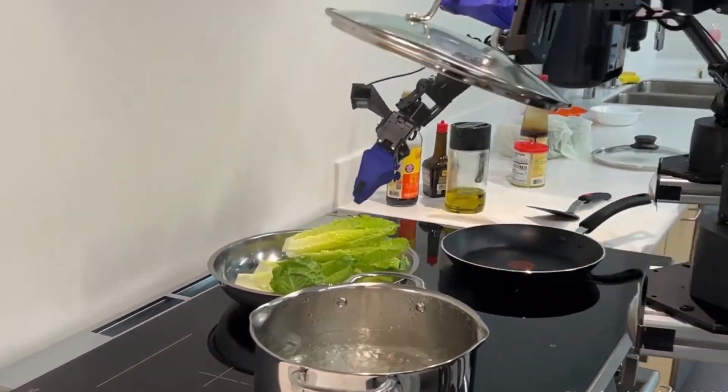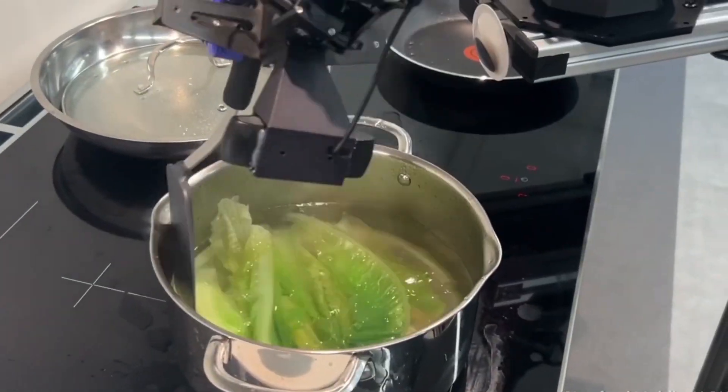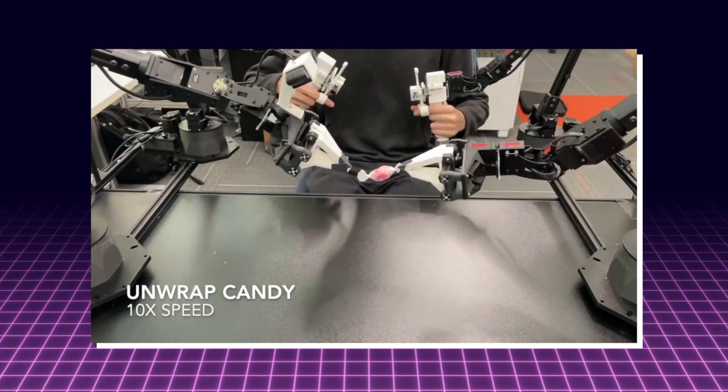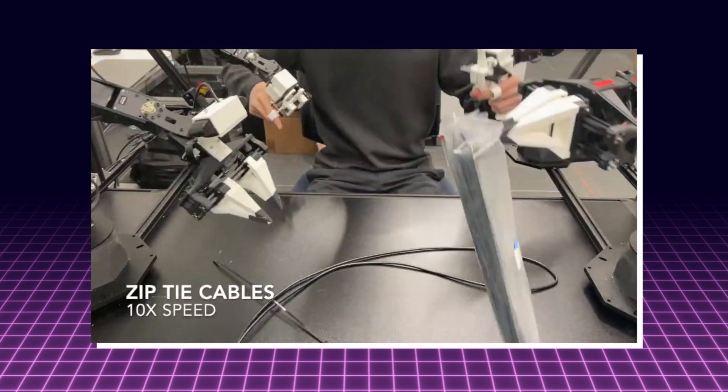When shown a task like cooking, the Mobile Aloha aims to learn the steps needed to complete it. It does this by observing a human perform the cooking task and collecting data from this demonstration.